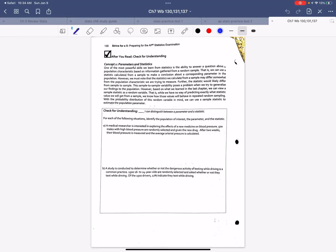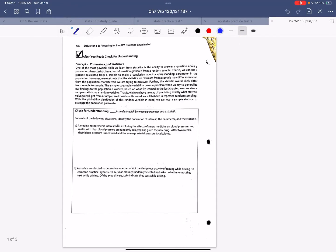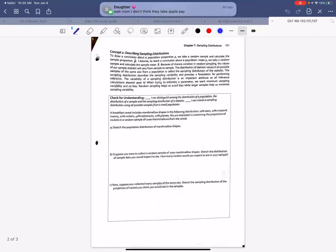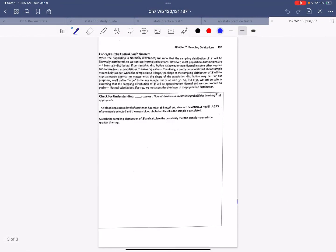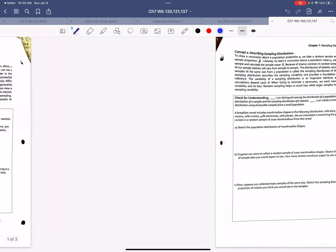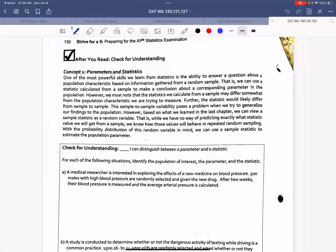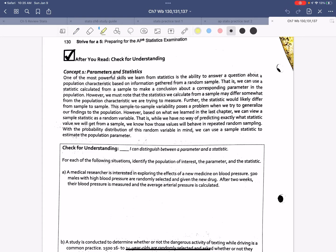Hey guys, we're going to do notes for 130, 131, and 137. So question number, or page 130, it says one of the most powerful skills we learn in stats is the ability to answer a question about a population characteristic based on information we gathered from a sample. So that's what we've been talking about, that's essentially what stats is all about.